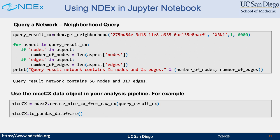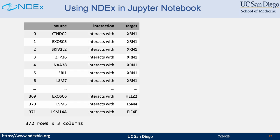After that, I will create a NiceCX object from the query result. NiceCX is a simple data model in our client library. Users can perform some basic operations on that object — for example, convert a network into a Pandas DataFrame. Here is the output when a query result is converted into a DataFrame.